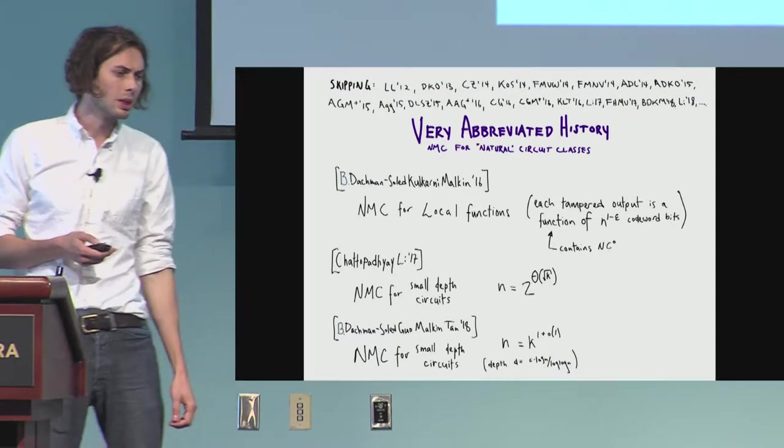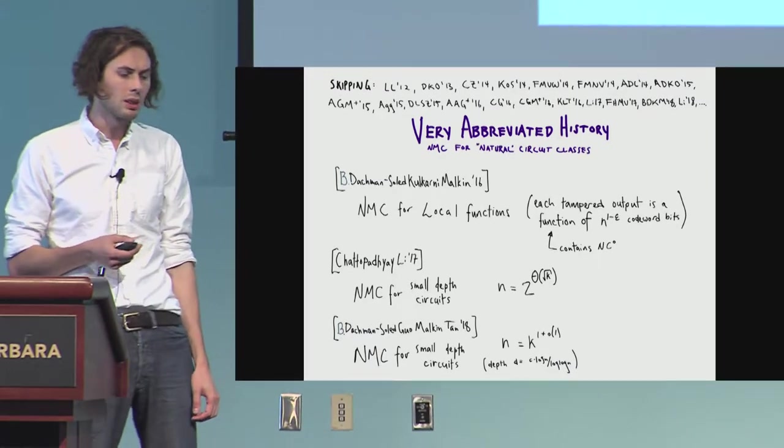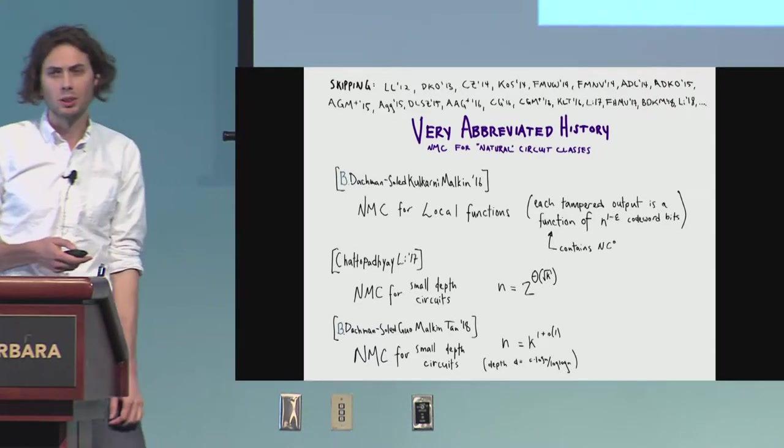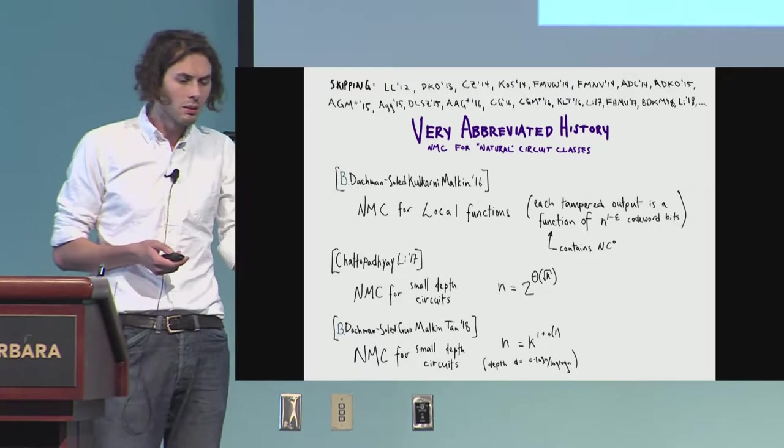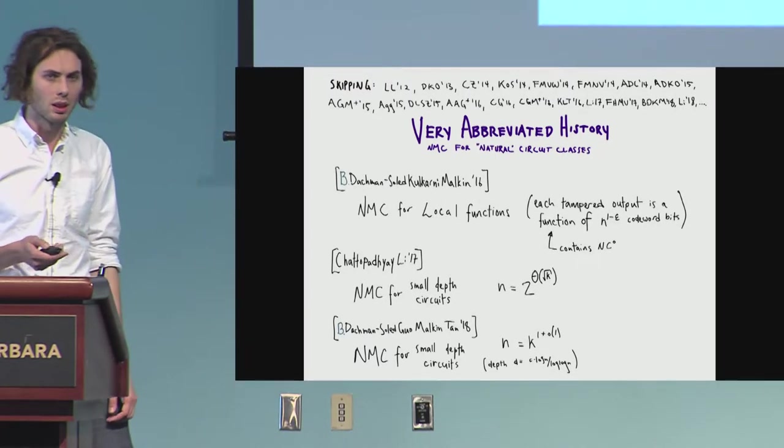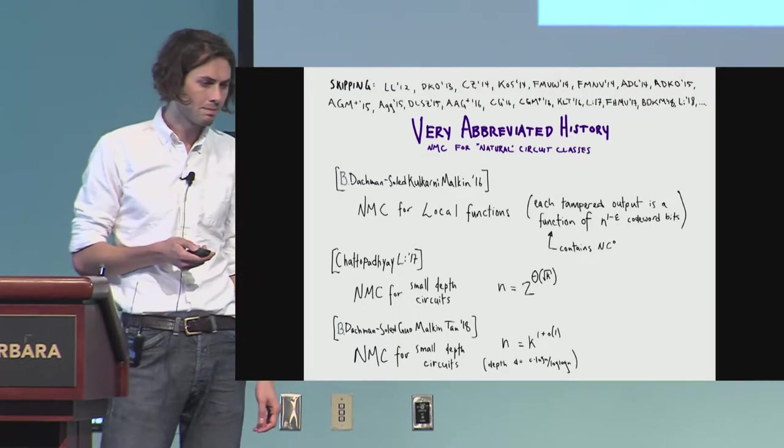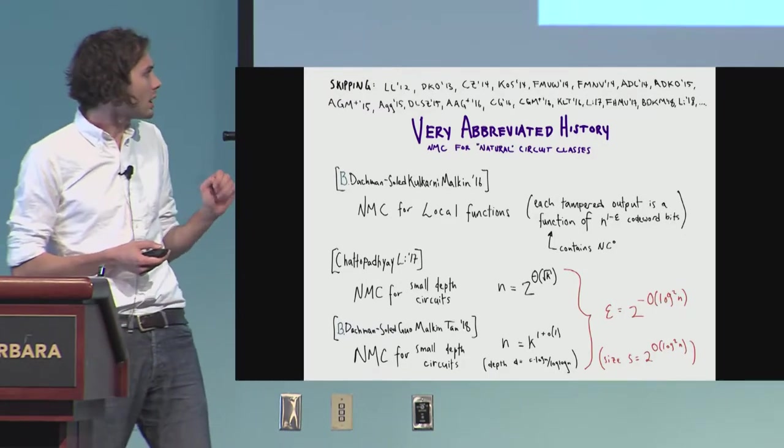The following year with Donna Dachman-Soled, Xiao Guo, Tal Malkin, and Liang Tan, we gave a new construction for non-malleable codes for small depth circuits, where the codeword length is almost linear in the message length. And it supports depth D up to log N over log log N.